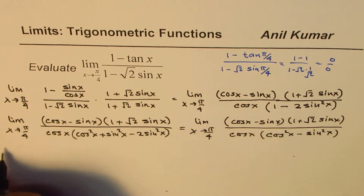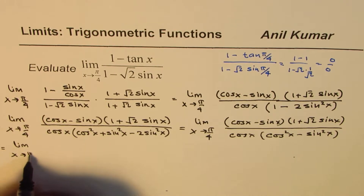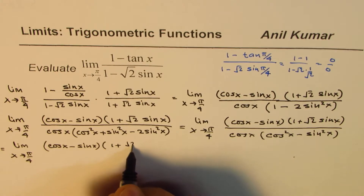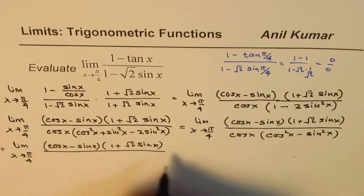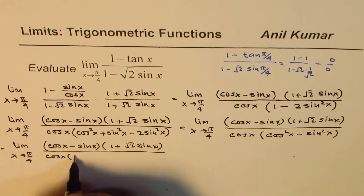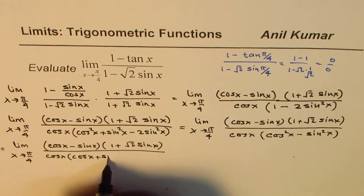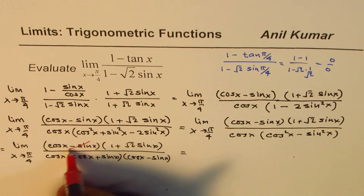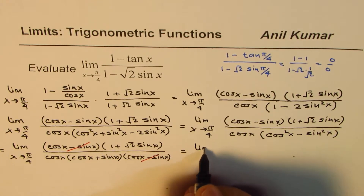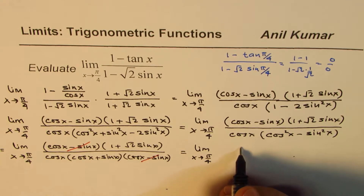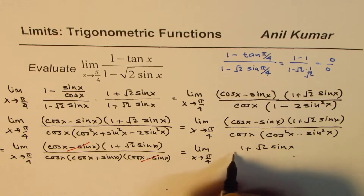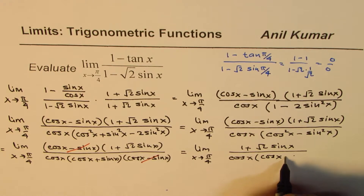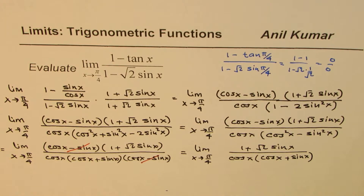Since cos²x - sin²x is a difference of squares, we can factor it as (cos x + sin x)(cos x - sin x). So the limit becomes: (cos x - sin x)(1 + √2 sin x) divided by cos x times (cos x + sin x)(cos x - sin x). We can now cancel the (cos x - sin x) terms, giving us (1 + √2 sin x) divided by cos x times (cos x + sin x).